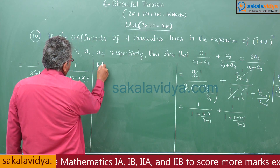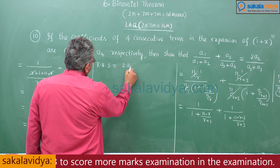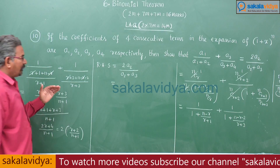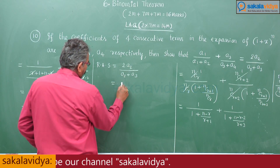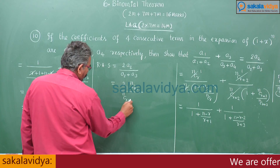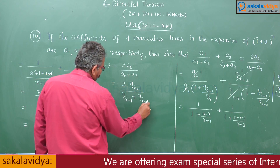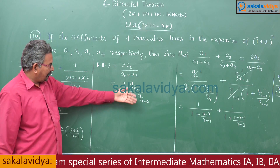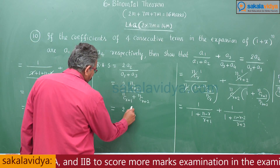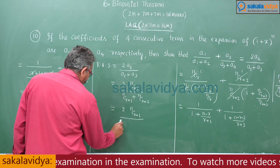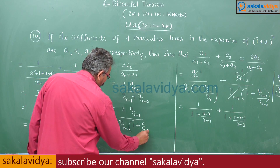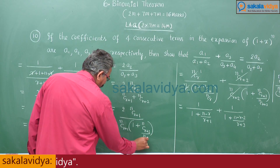Now take the RHS: 2a2/(a2 + a3). Since a2 = nCr+1 and a3 = nCr+2, this becomes 2·nCr+1/(nCr+1 + nCr+2). Taking nCr+1 common in the denominator, we get 2·nCr+1/[nCr+1(1 + nCr+2/nCr+1)].